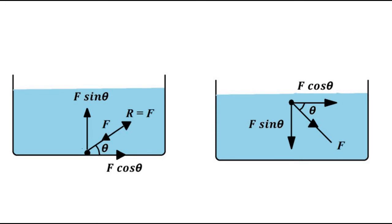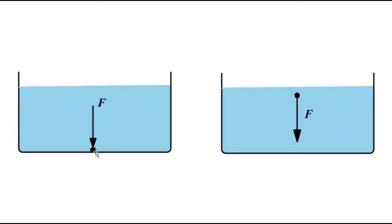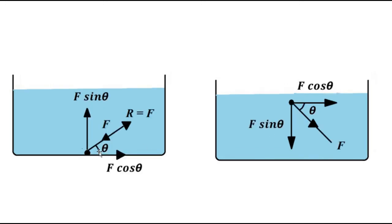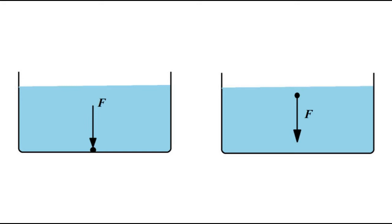The horizontal component F cosθ means there is movement in the fluid molecules, because this horizontal component will exert force on the liquid molecules to move from left to right in the horizontal direction, which contradicts our assumption that the liquid is at rest. This means that when liquids are at rest, the force acting by the liquid layers on the solid surface — or the resultant force exerted by the liquid layers above to the liquid layers below — is always perpendicular, never at an angle, because a horizontal component would cause movement, contradicting our assumption.